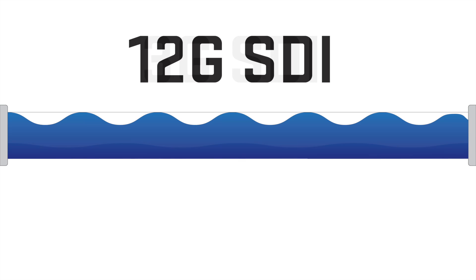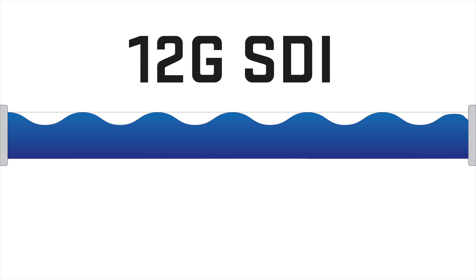In case you're still confused or you need metaphors to understand things like me, let's talk about pipes. Pretend this pipe is 3G SDI — about 3 gallons of water can pass through it per second. Now pretend this pipe is 12G SDI — about 12 gallons of water can pass through it per second. Makes sense, right?